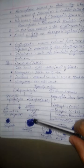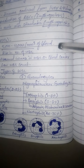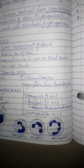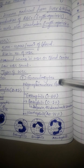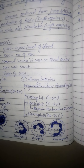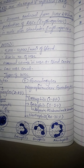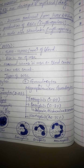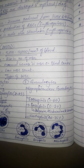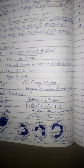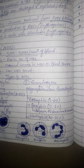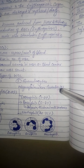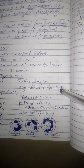Granulocytes are also called polymorphonuclear granulocytes. 'Poly' means many, 'morpho' means morphological features — the nucleus is morphologically different in each cell, meaning they can be bilobed, trilobed, or many-lobed. That is why they are called polymorphonuclear granulocytes. There are three types: eosinophil, basophil, and neutrophil.